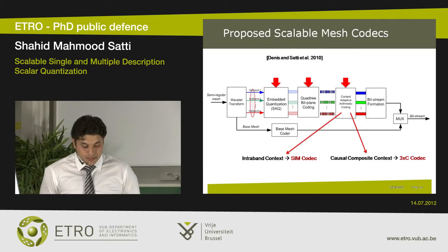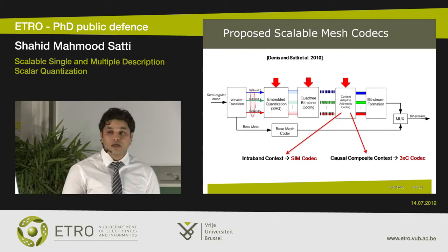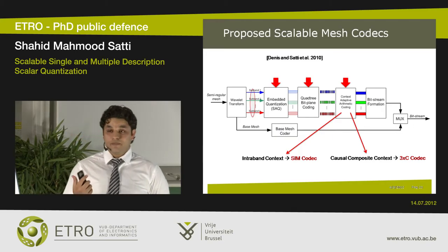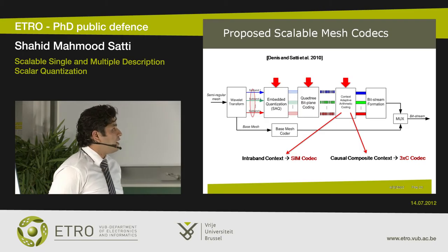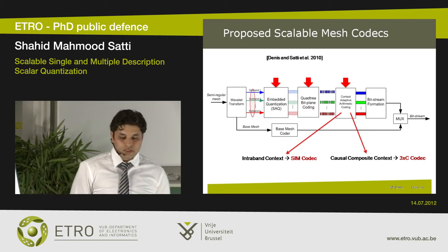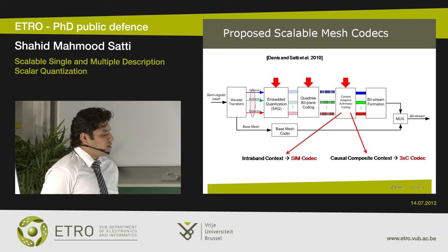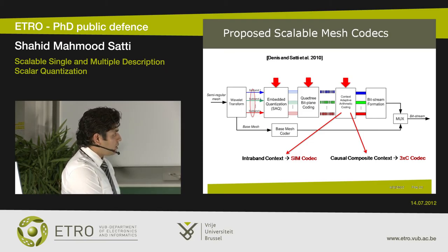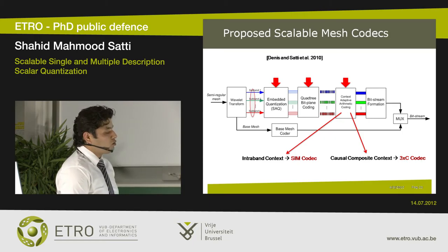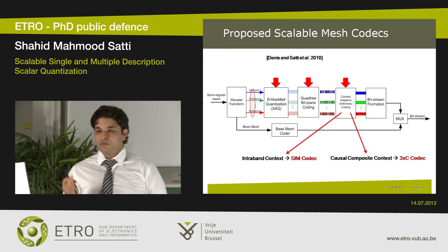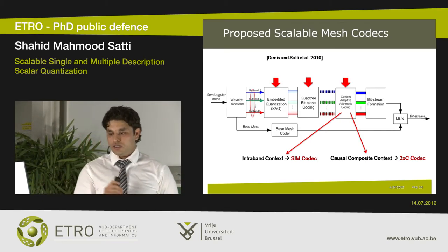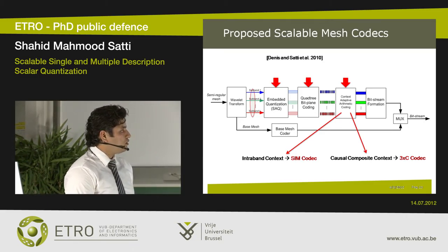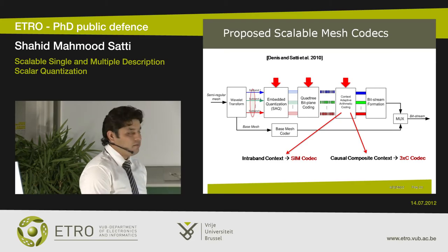By now we know the histograms, statistical properties, optimal embedded quantization scheme, and statistical dependencies to exploit. Combining all this knowledge, we designed two scalable compression systems for semi-regular meshes: the intraband SIM compression system (SIM codec) and the 3XE composite codec. We take the subband signal, apply embedded quantization, then use quadtree bit-plane coding to code each subband in a bit-plane by bit-plane fashion, with each subband handled independently. The coded bitstream is further compressed using context-adaptive arithmetic coding, and the base mesh is losslessly coded and embedded into the bitstream.